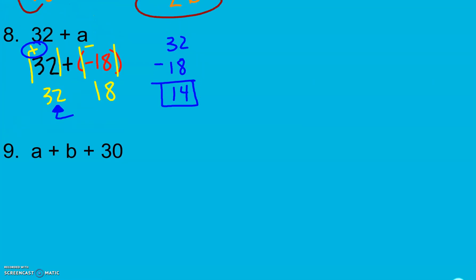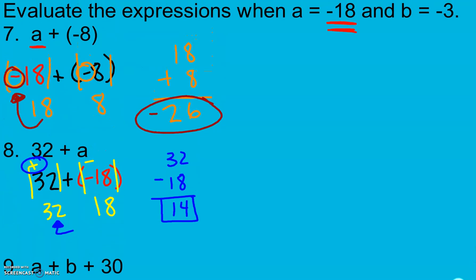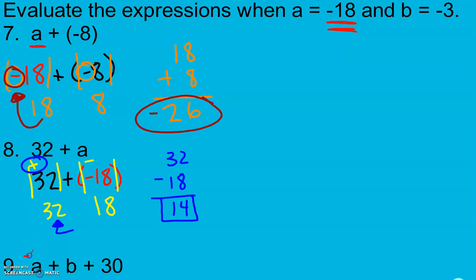And go ahead and give 9 a try. There are your a and b values. Okay, first thing we have is a, so I have a negative 18. And then we have a b, which is a negative 3. So I'm going to write those there just so I can scroll here.